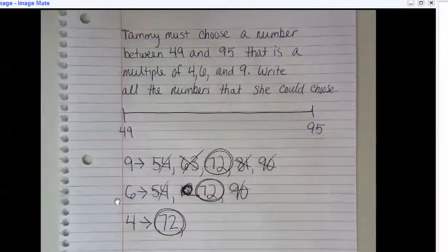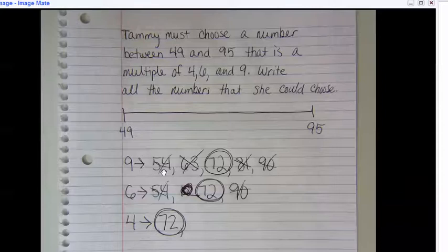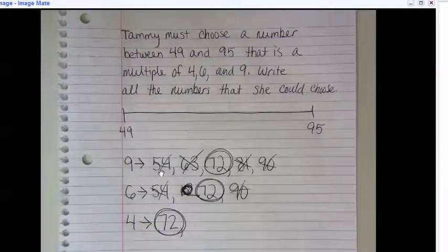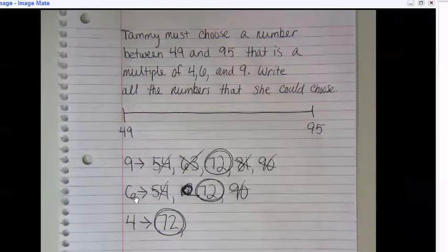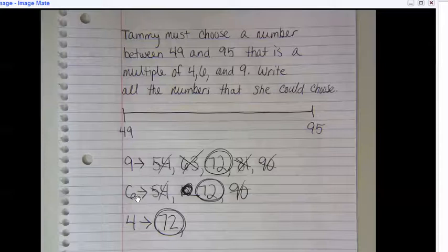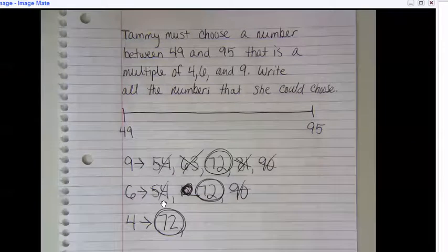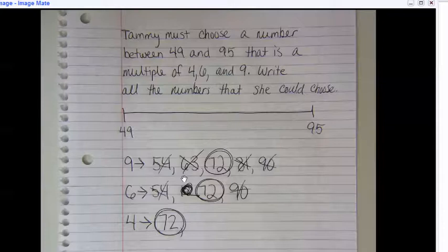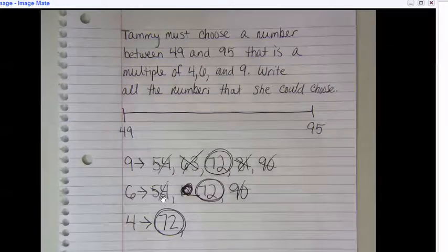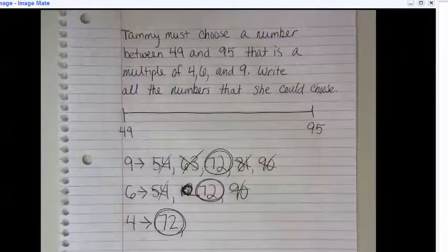And then for my six row, I look at all the numbers in my nine row and I ask myself: is 54 divided by six a whole number? If I get a decimal, then it's not going to work. Well, 54 divided by six is nine, so 54 works. 63 divided by six gives me a decimal, so I cross that out. And then 72 divided by six